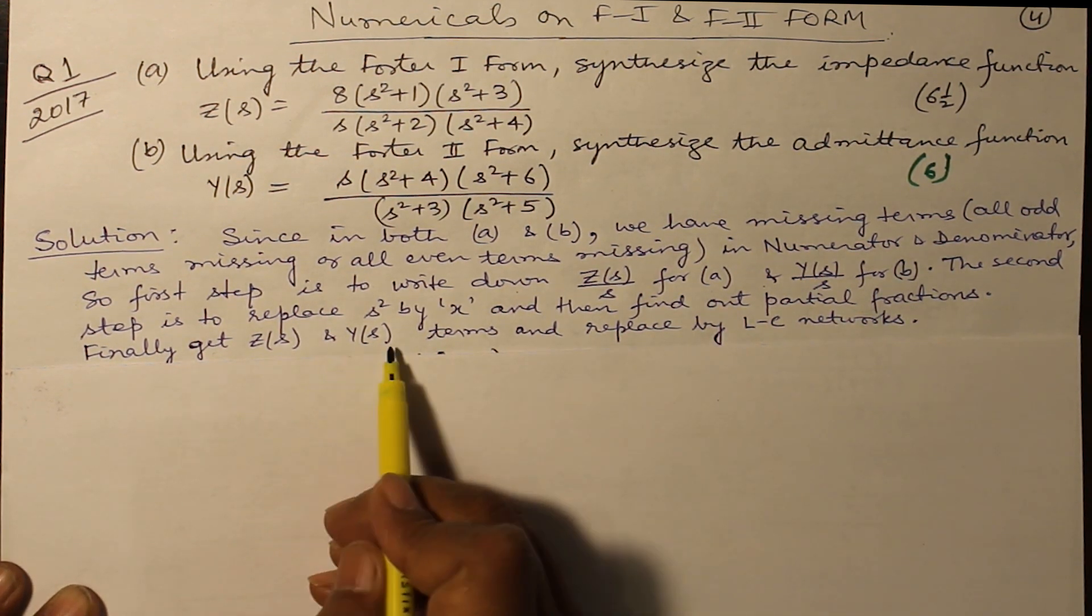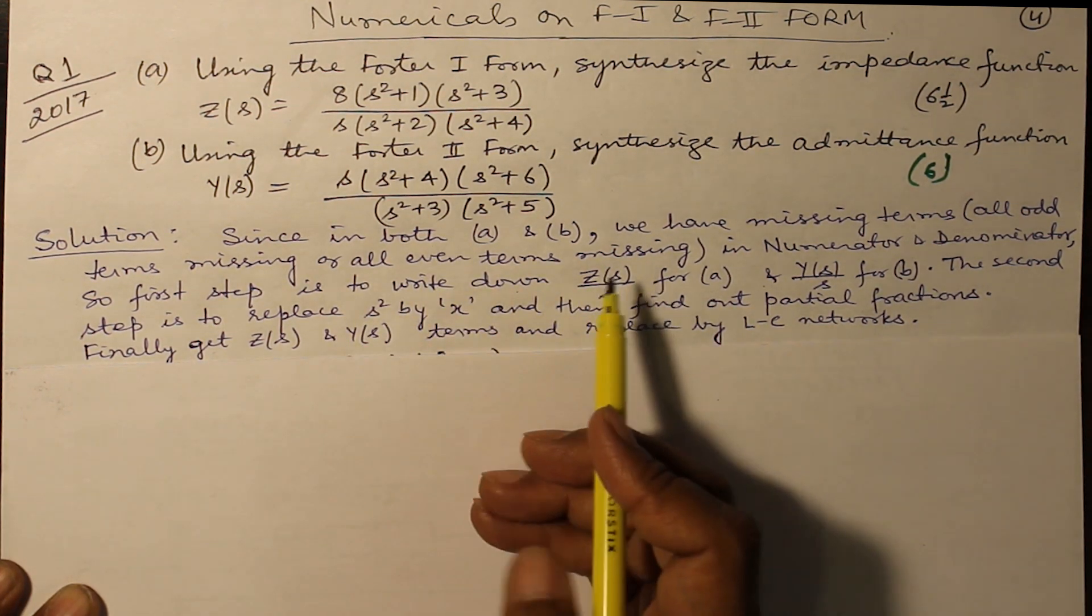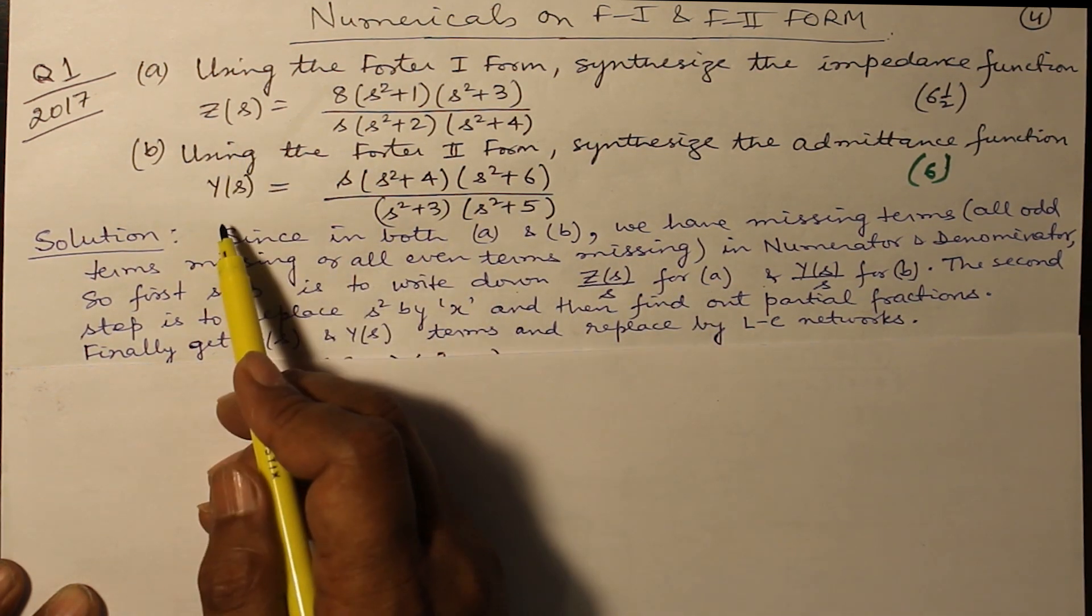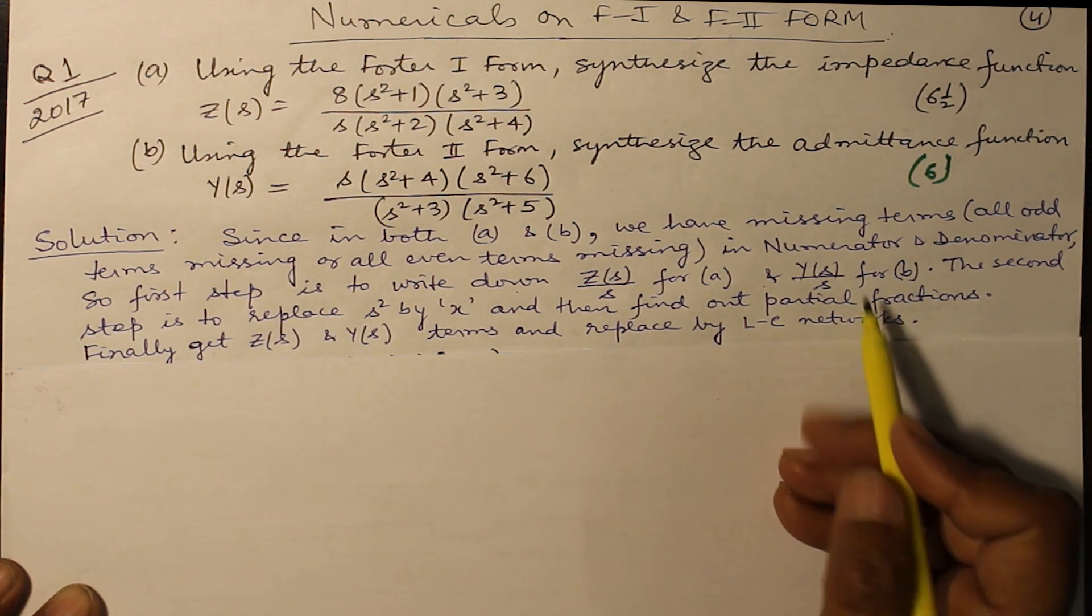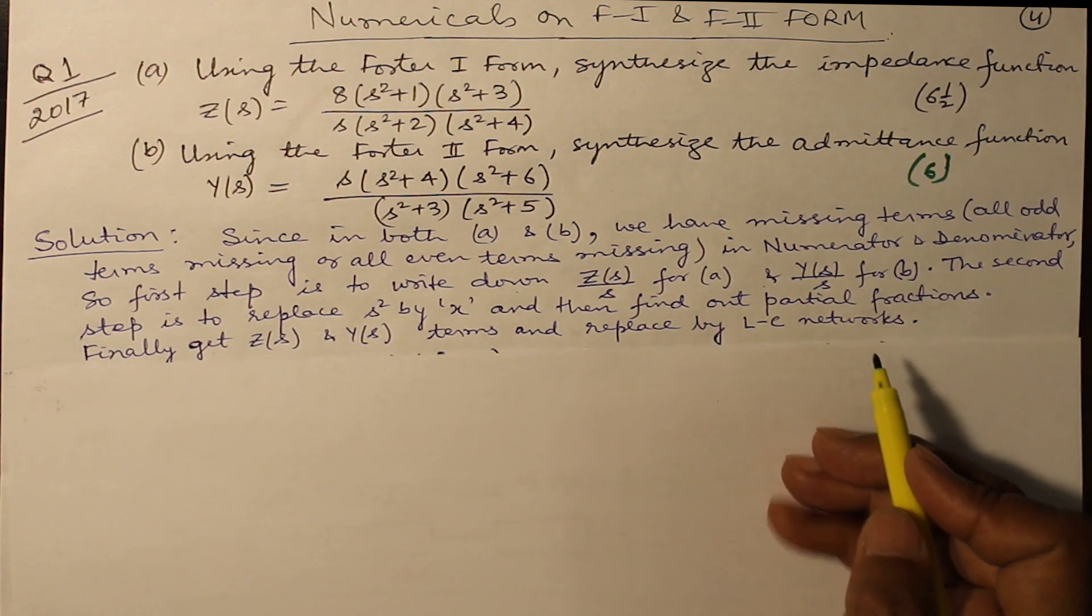Finally, you get the value of Z(s) and Y(s) terms. In terms of x, replace x by s², and then whatever terms you are having, Z(s) and Y(s), from that you replace it by the LC network. As I told you, if the terms are missing, then you get LC networks. Now let us do the question quickly.